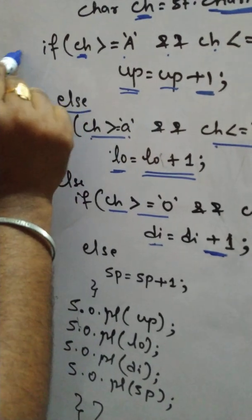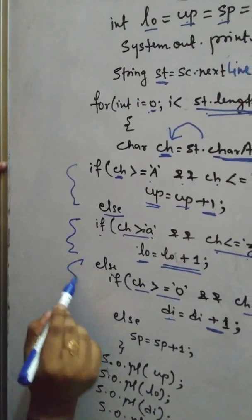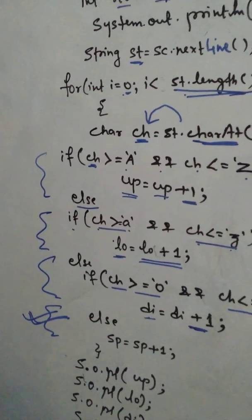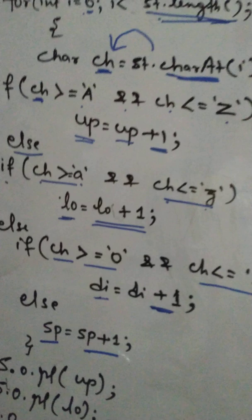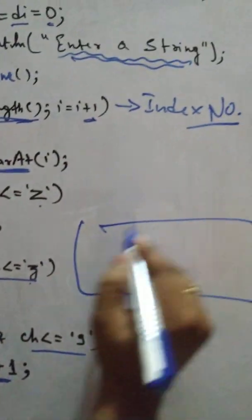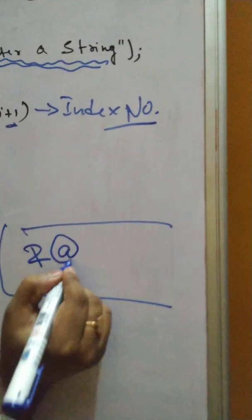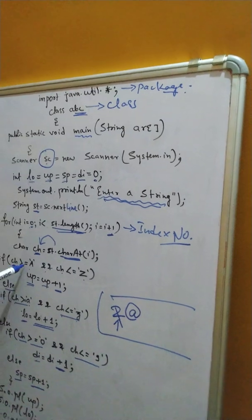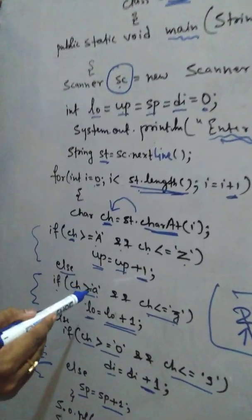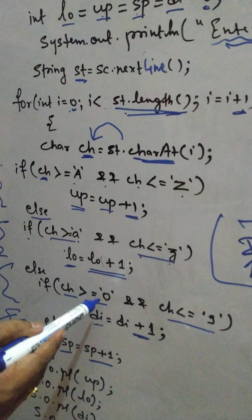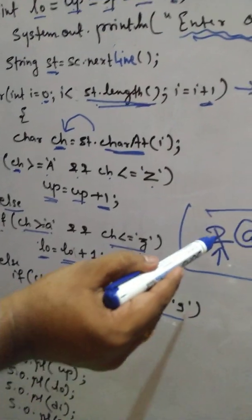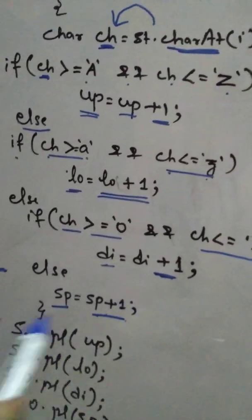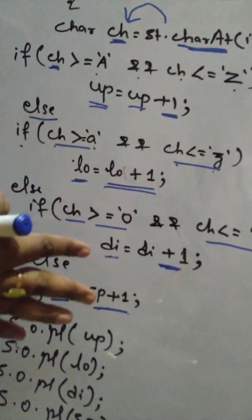Else, if this will be false, this part will be false, this part will be false. Obviously, which part will work? This part will work. Else part will work. That will be a special character. For example, if I am writing here, ampersand at the rate. Now, ampersand is, it is not coming in between a to z. It is not coming in between small a to z. It is not coming in between 0 to 9. Then, obviously, this particular thing is the special character. So, this will increase the value by plus 1. Like that, we find all the numbers.